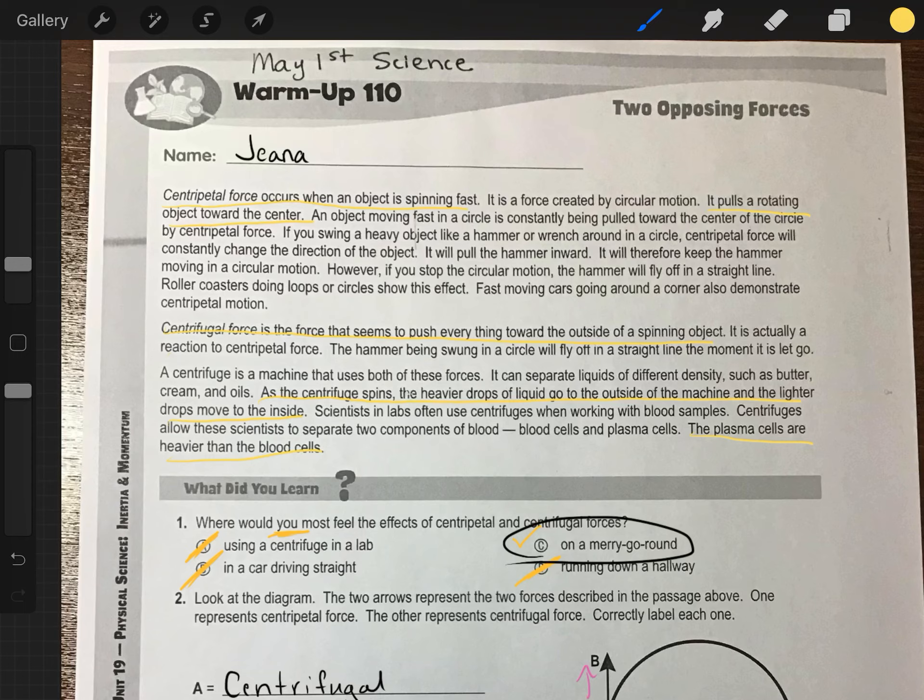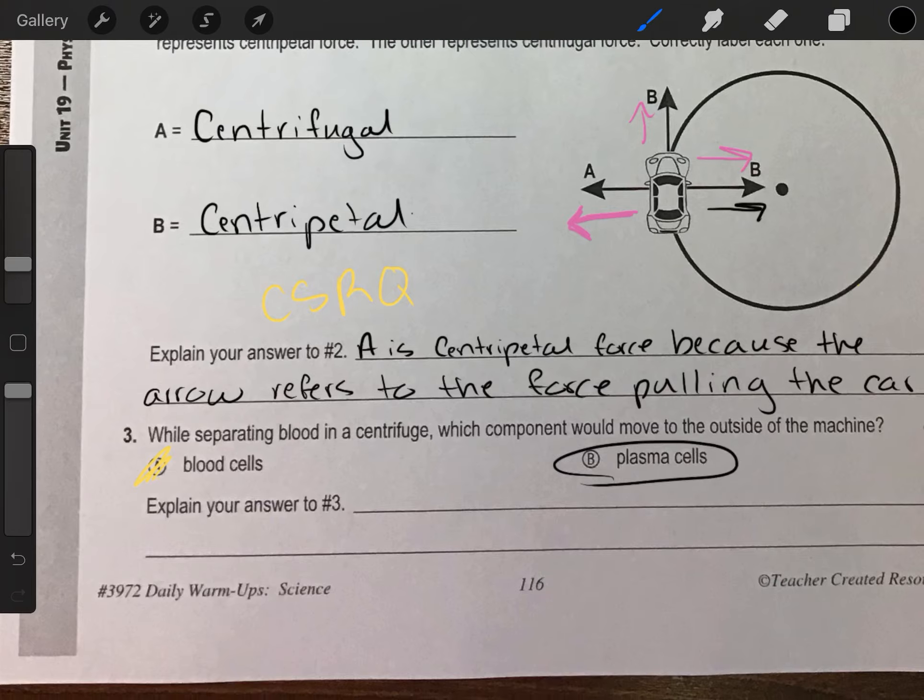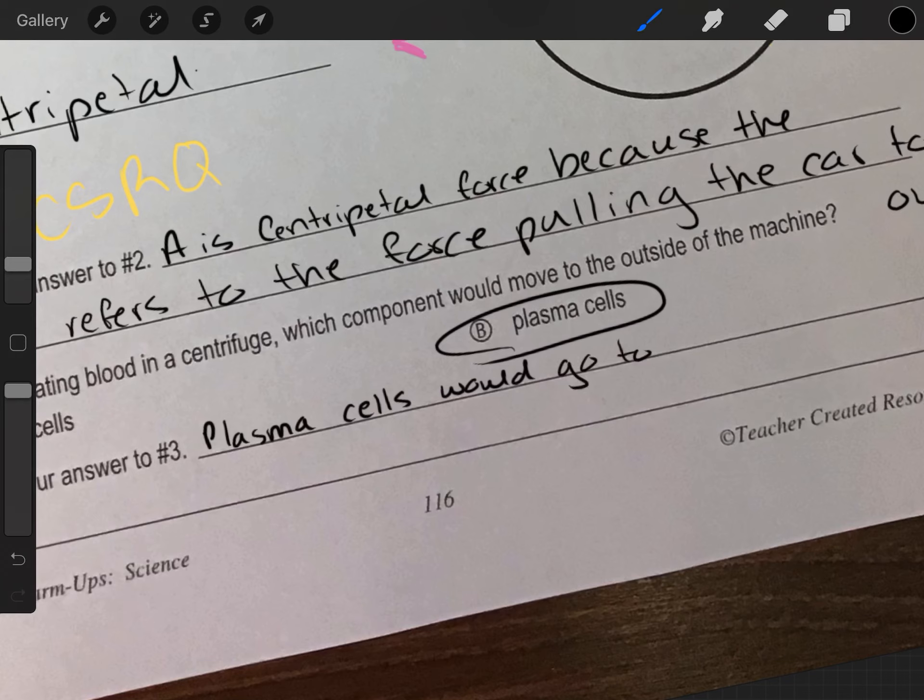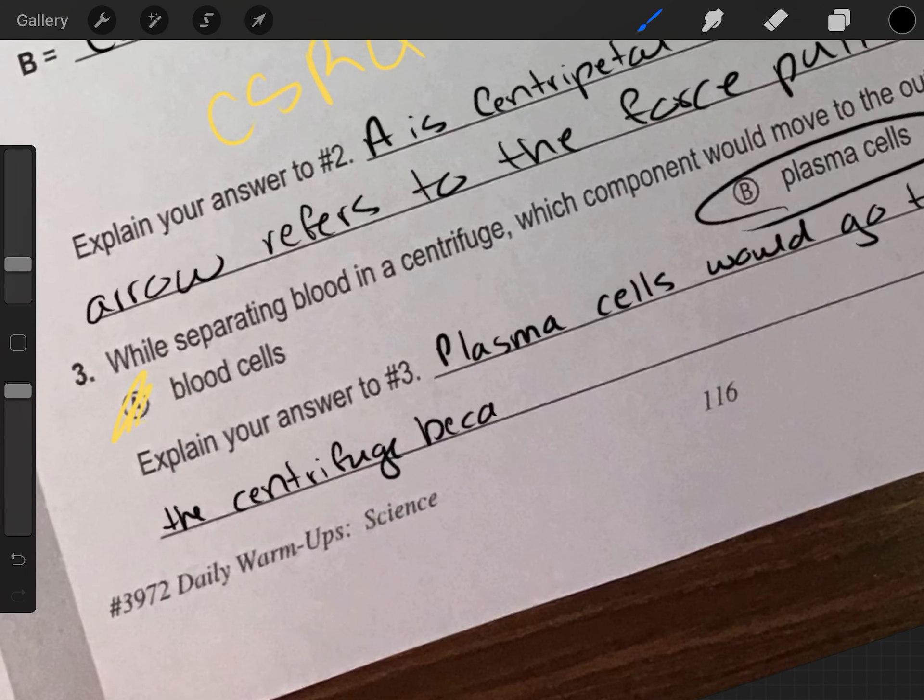Now, what I was talking to you about, it's after it's been spun, once it settles back in its vial, which is going to be on the top or the bottom. In that case, the plasma cells are going to be on the bottom. But in this case, they're talking about while it's spinning, which cells are going to be going to the outside of the machine. We know the heavier drops of liquid go to the outside, and plasma cells are heavier. So it must be B, plasma cells. And then explain your answer. You would just say that plasma cells go to the outside of the machine, or would go to the outside of the centrifuge, because they are heavier than blood cells.